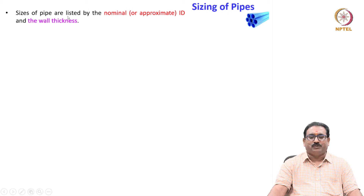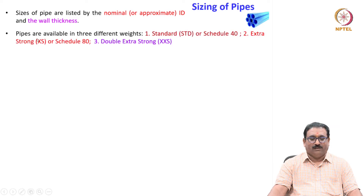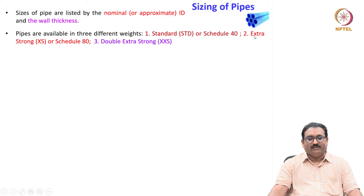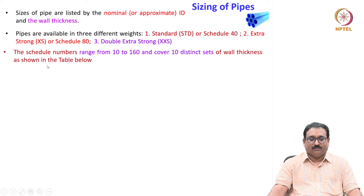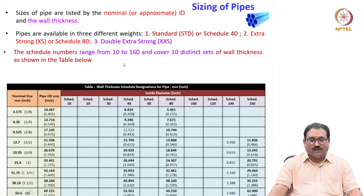Sizing of pipes is listed by the nominal or approximate inside diameter (ID) and the wall thickness. Pipes are available in three different weights: standard or Schedule 40; extra strong or Schedule 80; and double extra strong. The schedule numbers range from 10 to 160 and cover 10 distinct sets of wall thicknesses, as shown in the table.